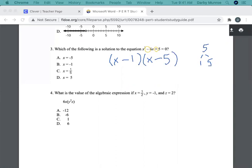So if I test that out, negative 1 times negative 5 is plus 5. And if I add them, negative 1 plus negative 5, that gives me negative 6. So to get the solutions, you set each one of these things equal to 0. So x minus 1 equals 0 and x minus 5 equals 0. Add 1 to both sides, x equals 1. Add 5 to both sides, x equals 5. So the answer for this one is D.